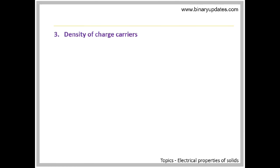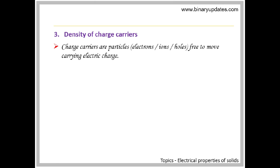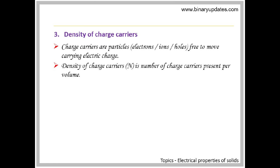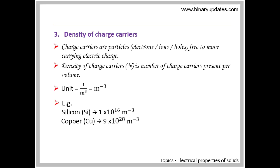The third property is density of charge carriers. Here, charge carrier means electrons, ions, or holes. These are free to move and carry electric charge. By definition, it is the number of charge carriers present per volume. It is denoted as N, measured in per meter cube. In conductors, carrier density is higher than in semiconductors.